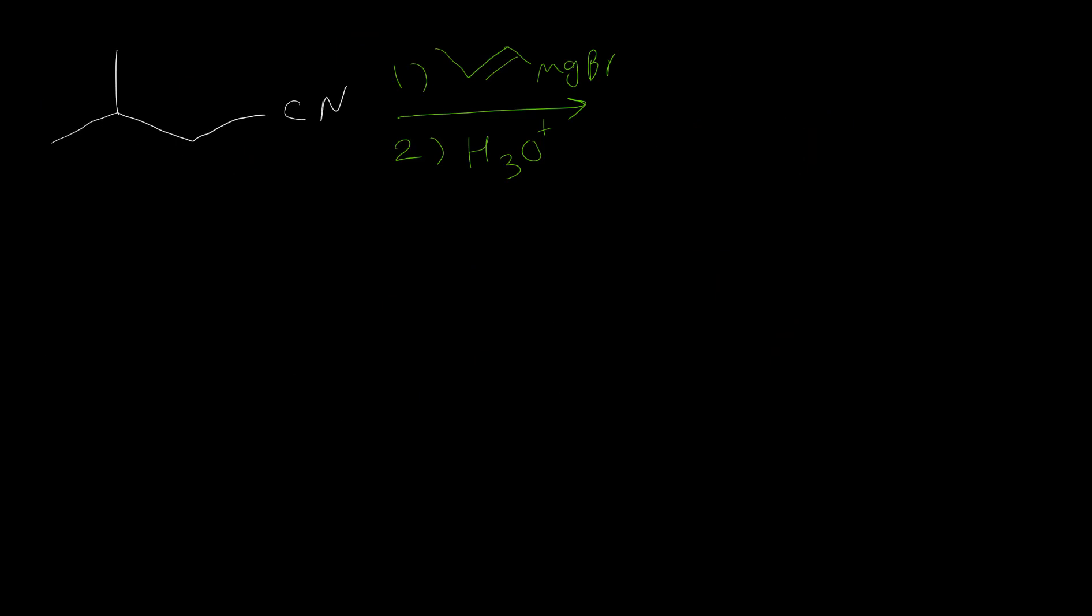Again, we are going to rewrite the whole structure from nitrile. But instead of cyanide group or nitrile group, we put C double bond O or carbonyl group. Then on the right side, we put the alkyl group from Grignard.